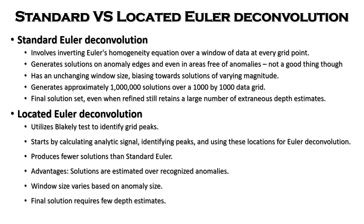One of the advantages of the located Euler deconvolution is that solutions are estimated only over recognized anomalies, as against the standard Euler deconvolution which gives solutions even in areas where there are no anomalies. Also, it has a varying window size based on the size of the anomaly, unlike the standard Euler deconvolution which has an unchanged window size. The final solution also requires fewer depth estimates.